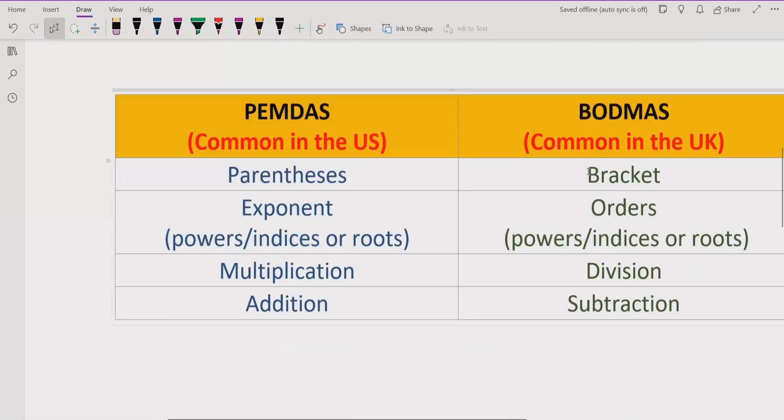Before starting, we have to recall the PEMDAS and BODMAS rules in arithmetic operations. According to PEMDAS, we have P for parentheses, which means rounded bracket, square bracket, and curly bracket. If you're using BODMAS, B is also related to rounded, curly, and square brackets.